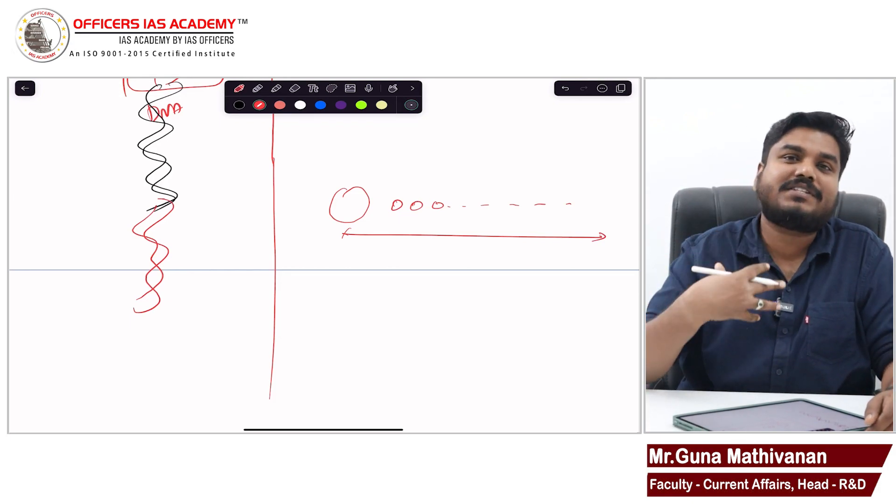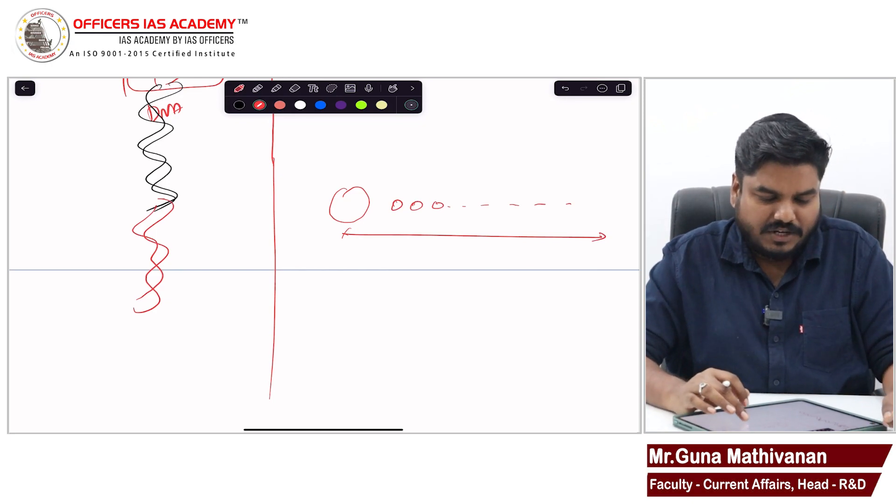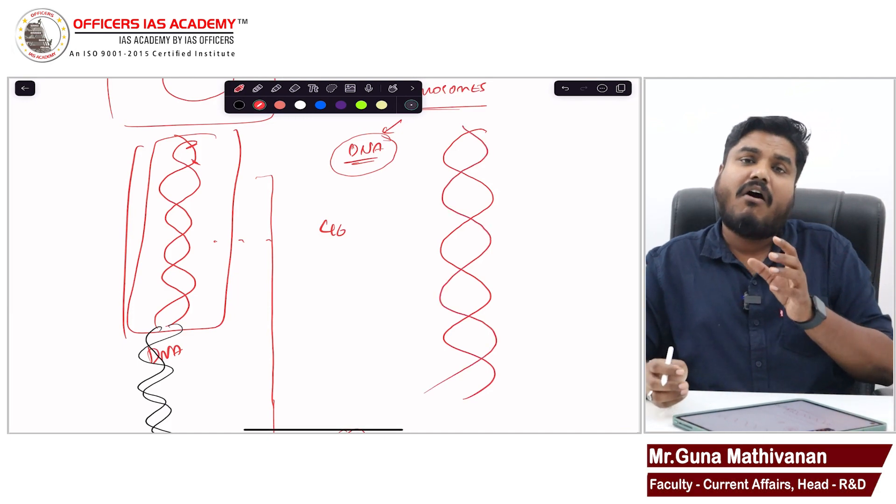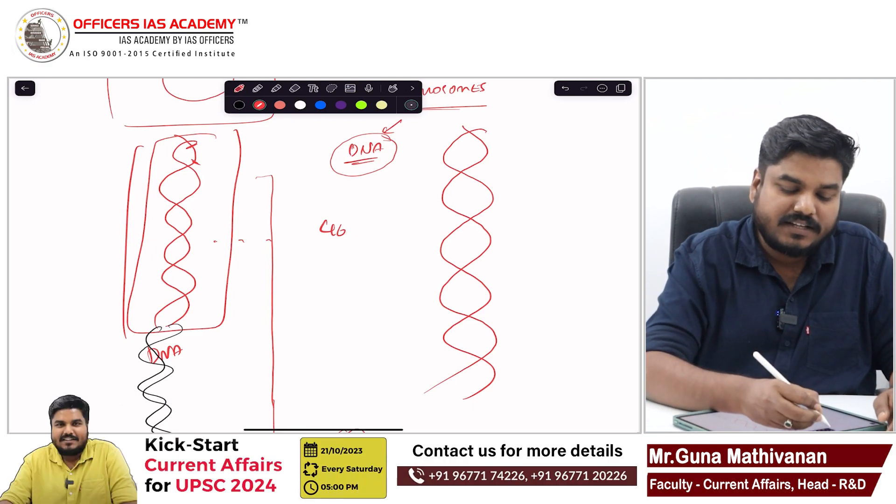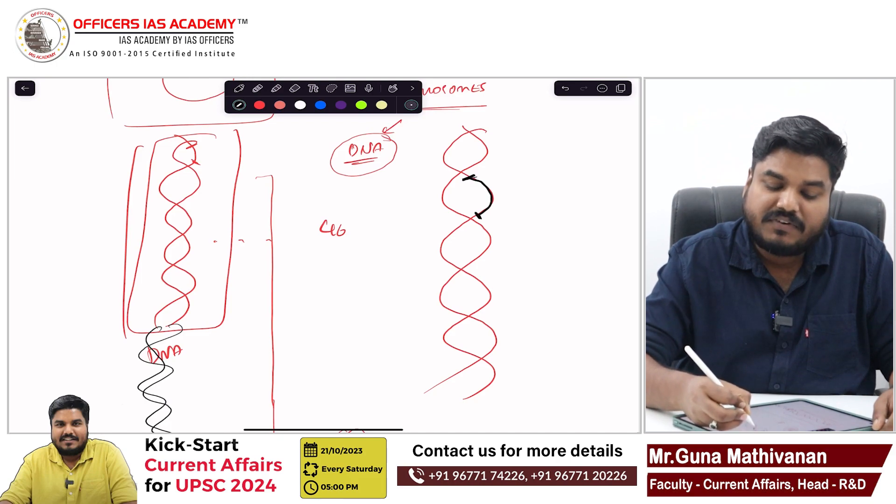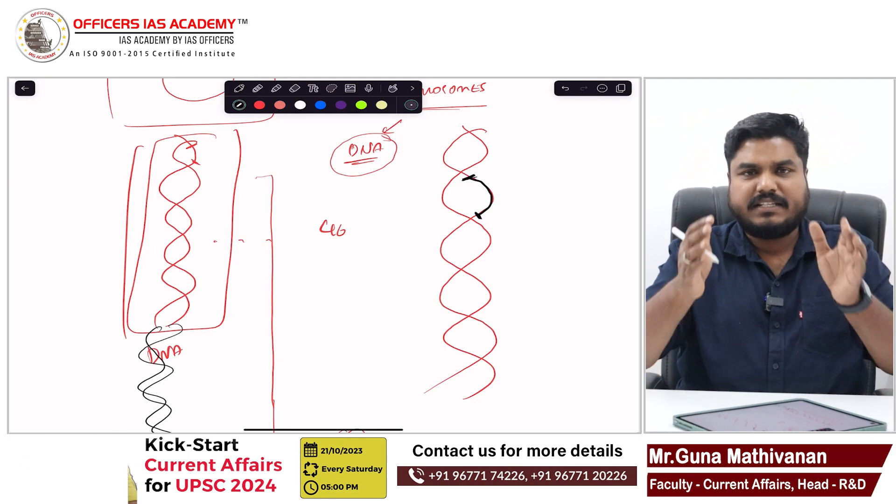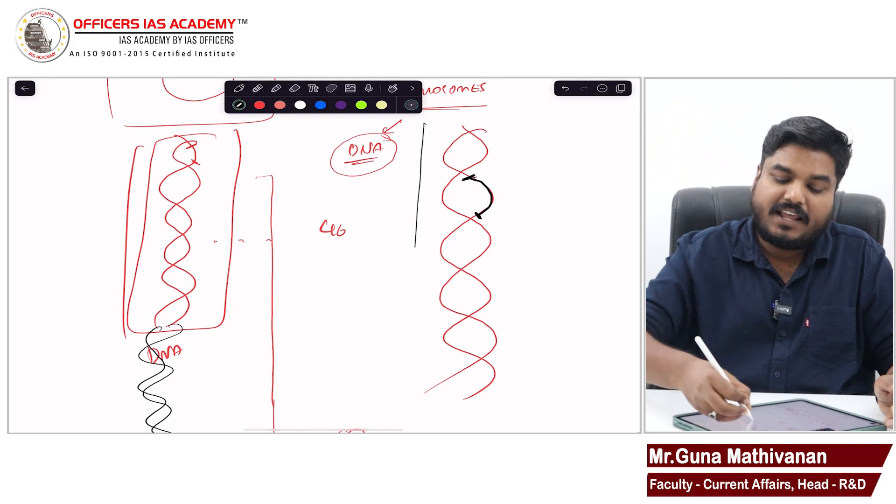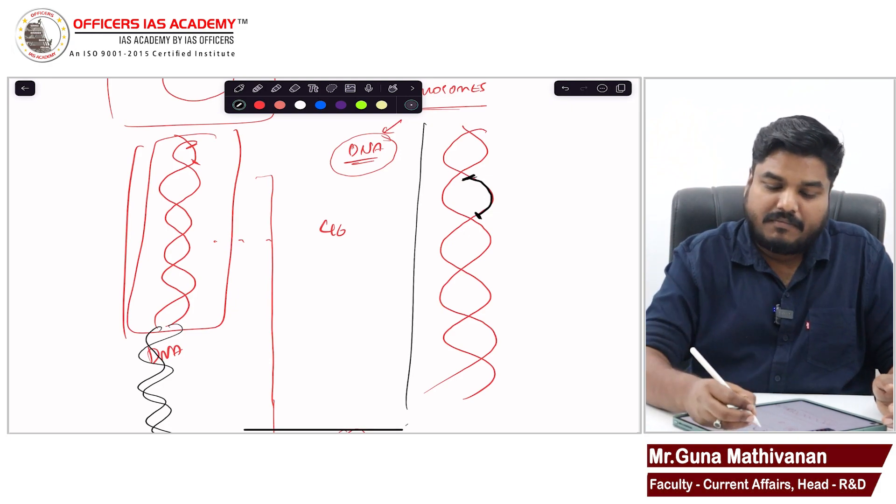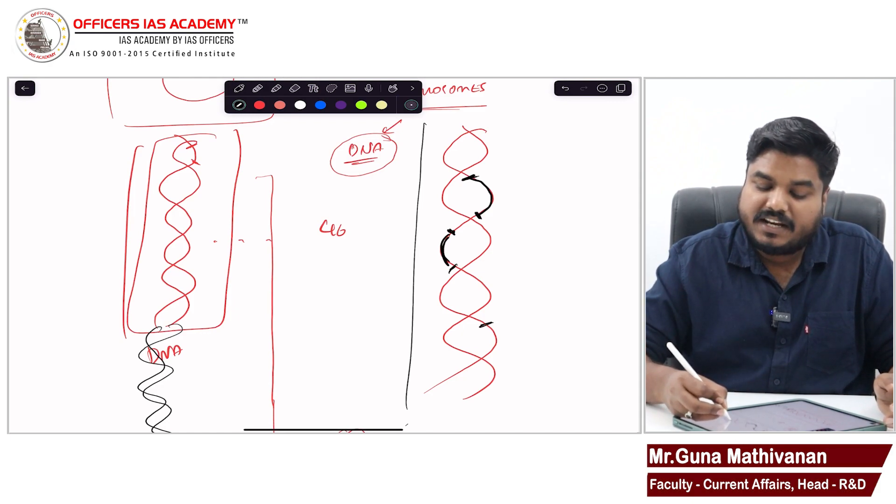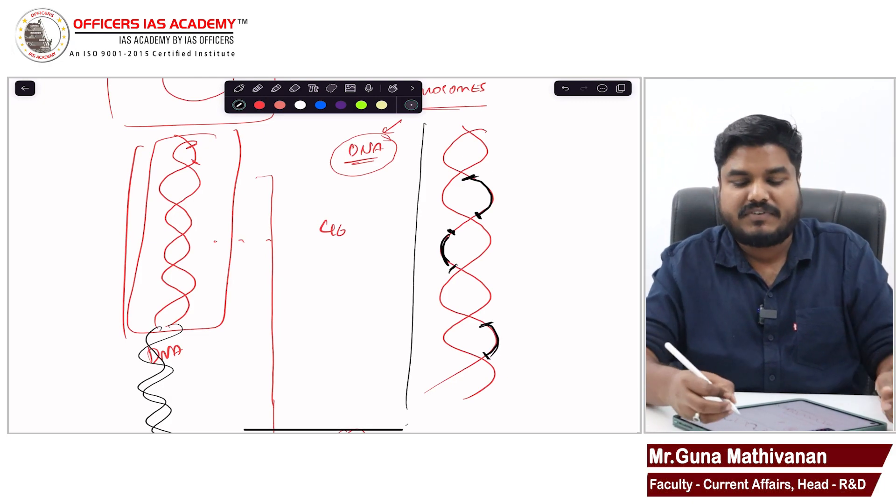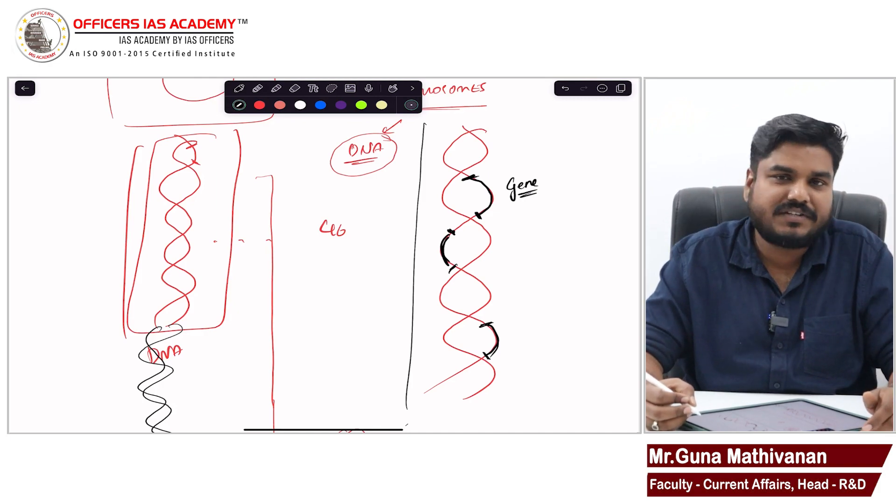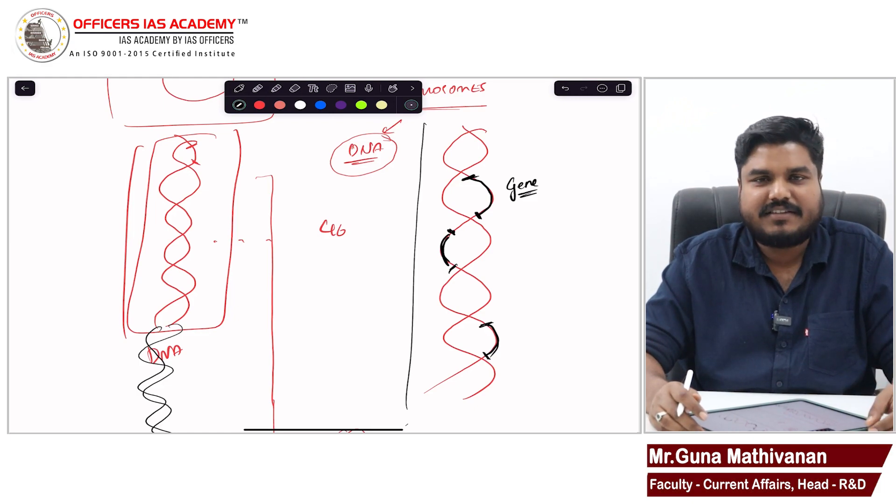Coming back to our topic - this DNA strand has information, but not all the information is useful. There are certain segments of DNA which have the most crucial information. Imagine DNA as a book - not every page is important, there are certain selective pages which are very important. Such segments of DNA are called genes. Gene is a segment of DNA which has the most important information. This is the basic difference between genes and DNA.